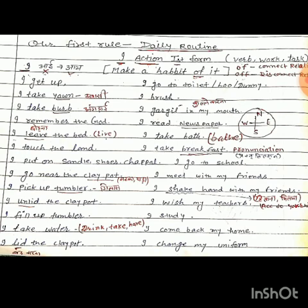For our daily routine we will use a formula, a rule. The rule is: I + action + first form. Whenever we speak, we use 'I.' Note that 'I' is pronounced as 'I,' not incorrectly. And action means work, verb, task — whatever work we do is known as action.